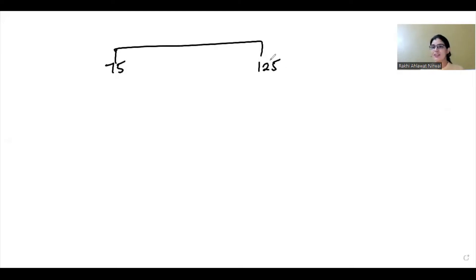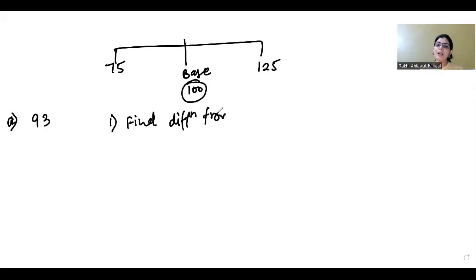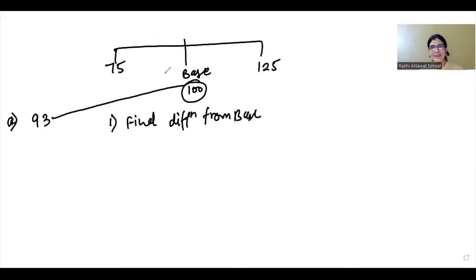Let's see how we can find out the square. You should know squares from 1 to 25. Here the base value is 100. Let's look at an example: find the square of 93. First of all, you will find the difference from the base. The difference here is 7.